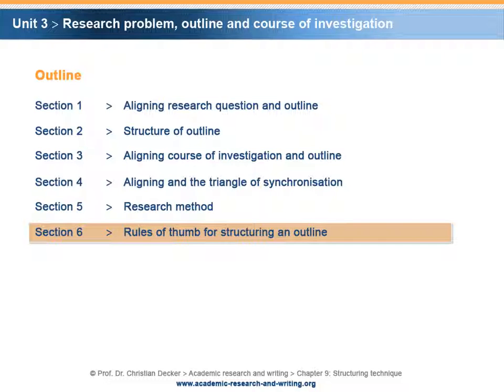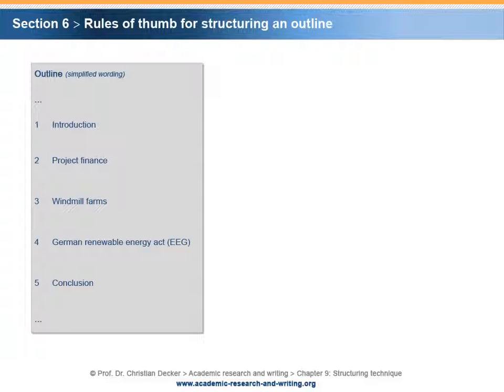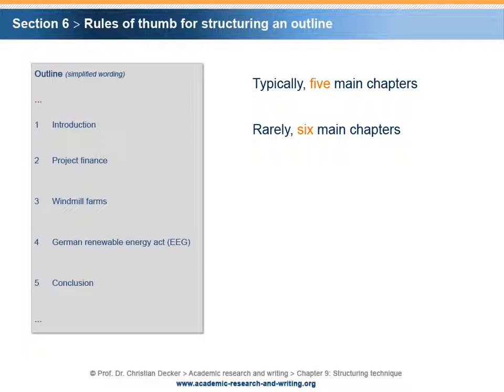Section 6 – Rules of Thumb for Structuring an Outline. With regard to the outline itself, there are some rules of thumb for its proper structure. Typically, the core of an outline has only five main chapters. In rare cases, six main chapters may be needed. The introduction is always the first chapter and the conclusion is always the last chapter.